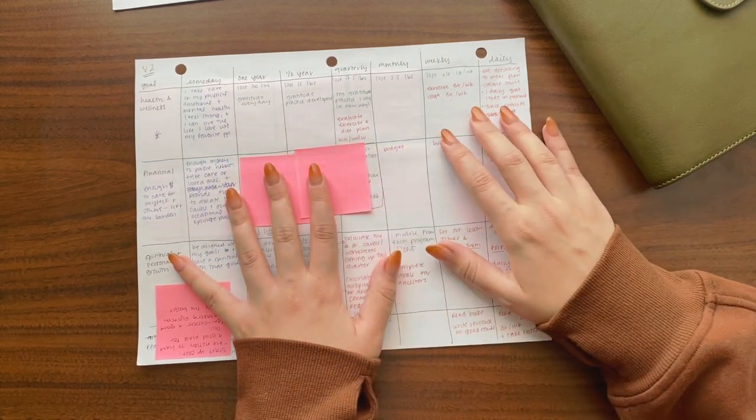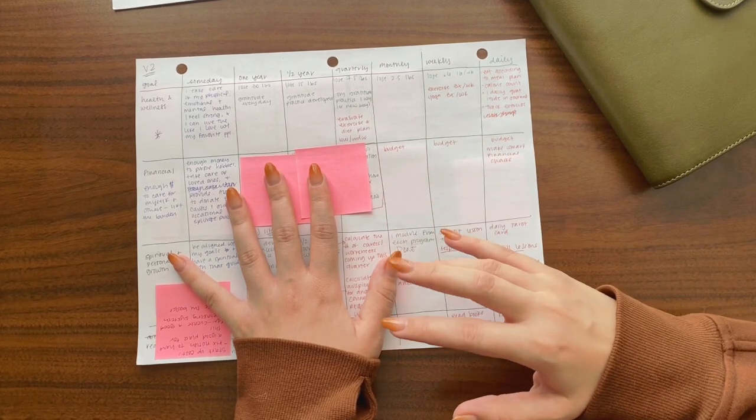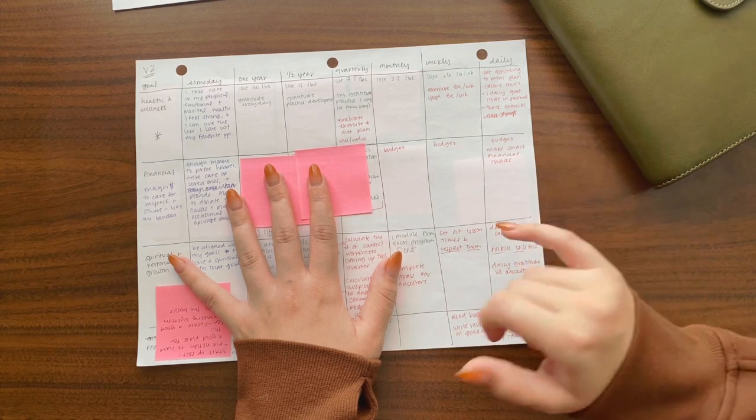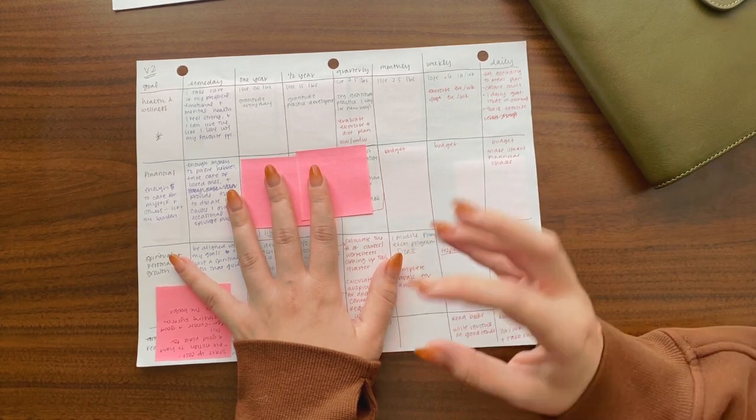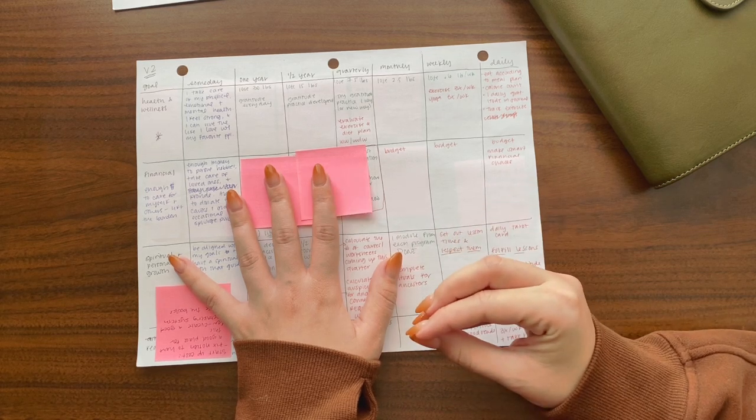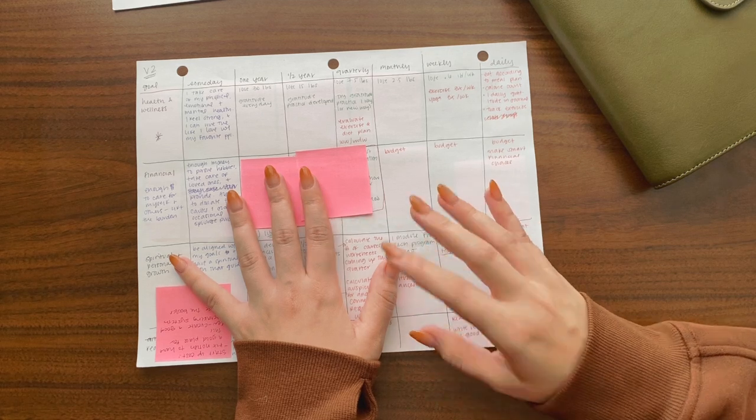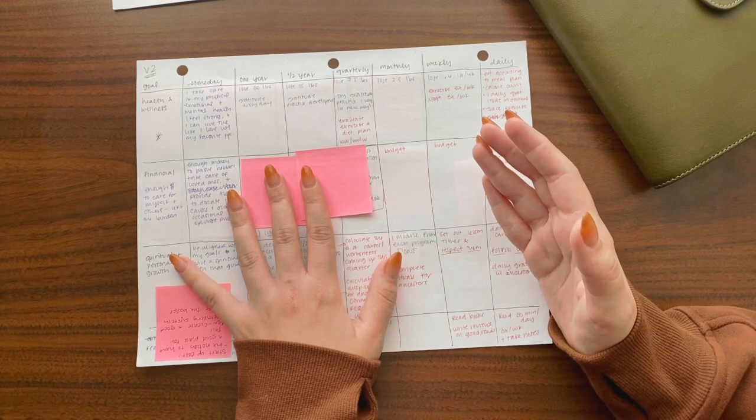But my basic everyday tasks are going to be really important. And that's why it's a priority because health has to be attended to every single day. I have to eat according to my meal plan. I need to calorie count. I need to track my exercise. And then I have a daily gratitude journal thrown in there so that I don't disconnect my physical health from my mental health too much.